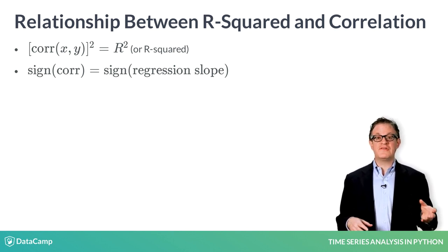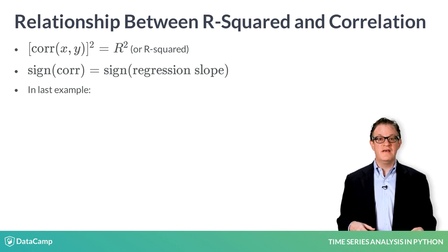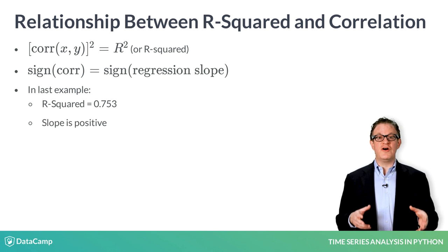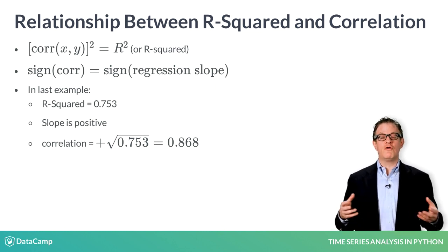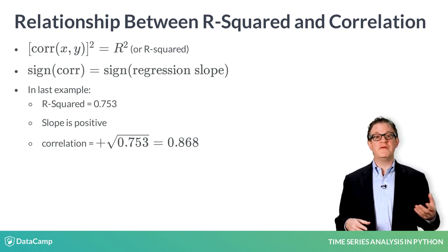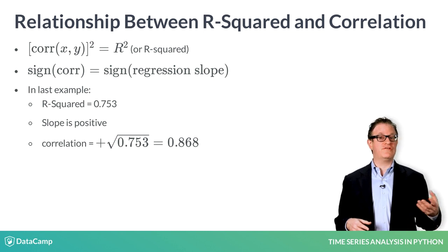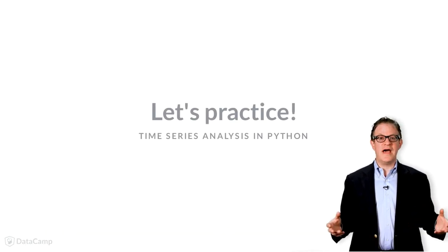In the example you just analyzed of large-cap and small-cap stocks, the R-squared was 0.753. The slope of the regression was positive, so the correlation is then positive the square root of 0.753 or 0.868, which can be verified by computing the correlation directly. Now it's your turn.